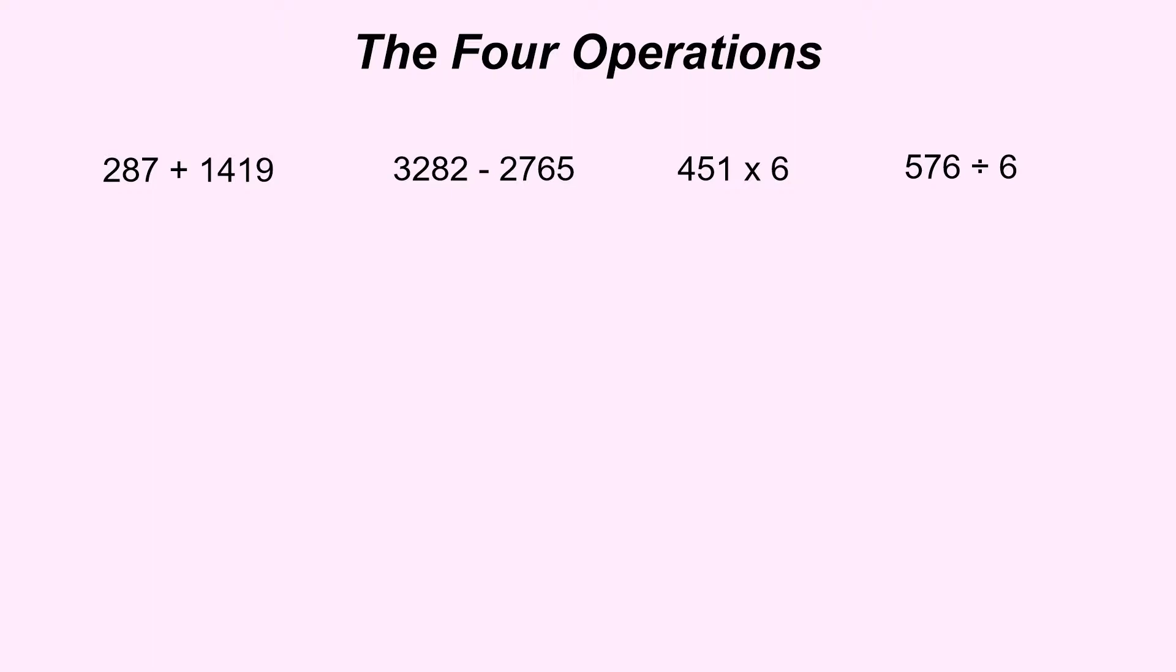Okay so the first question we have is 287 plus 1419. What we're going to do is we're going to lay that out just as a normal addition column sum. So we put 287 there and the important thing here is you line it up from the right hand side so 1419 the nine has to go under the seven so that the place value is exactly the same for each number here. So we've got our ones our tens our hundreds and our thousands.